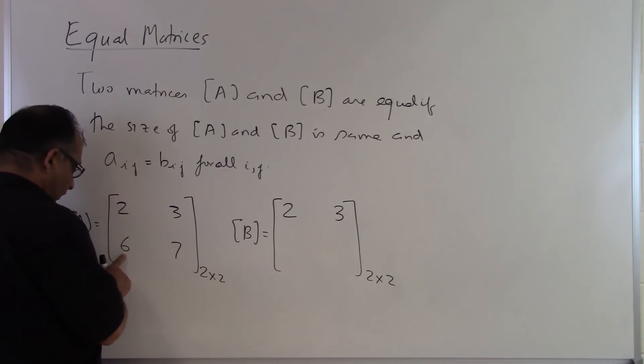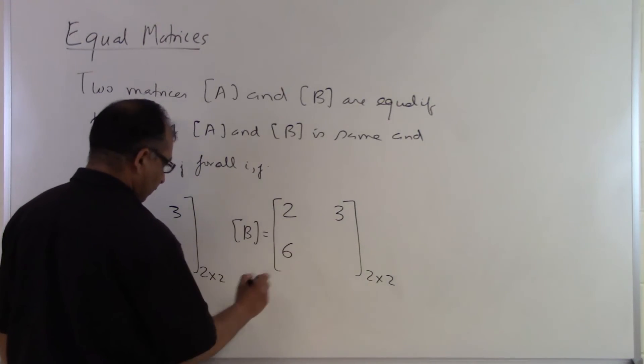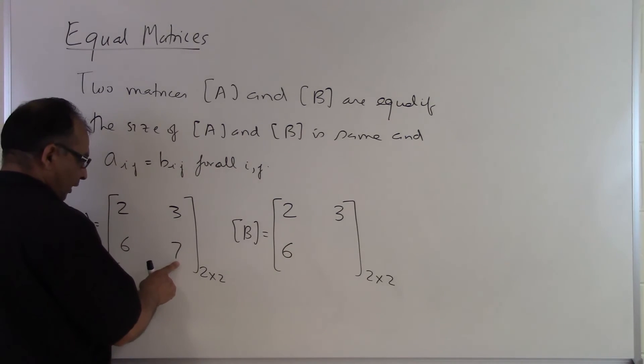This is second row, first column. The second row, first column is here. So that would be 6. This is second row, second column here is 7.